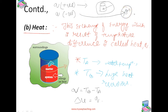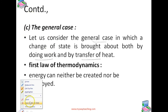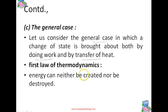Now consider the general case in which a change in internal energy is brought about both by doing work and by transfer of heat. We write the change in internal energy as: delta U equals q plus w. This is equation one.